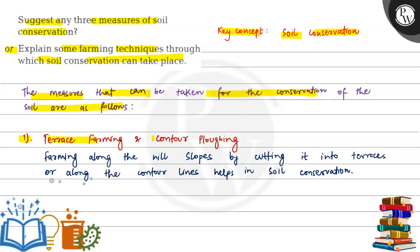First one, terrace farming and contour ploughing. In this method, farming is done along the hill slopes by cutting it into terraces or along the contour lines which helps in soil conservation.